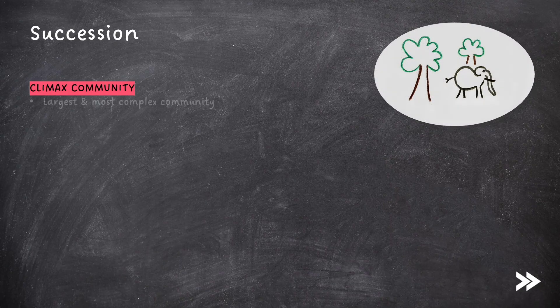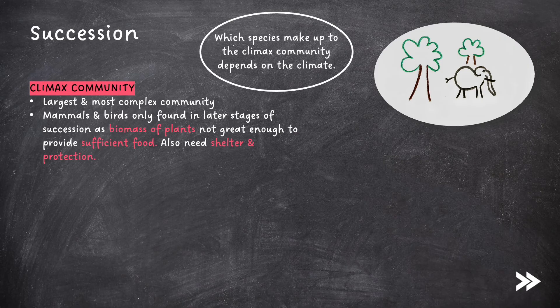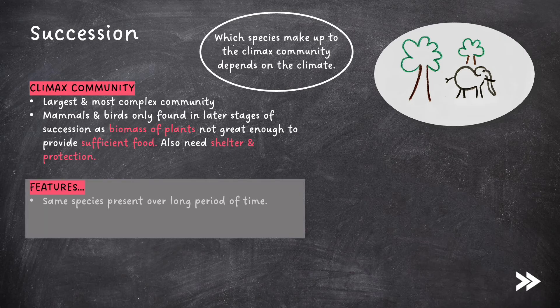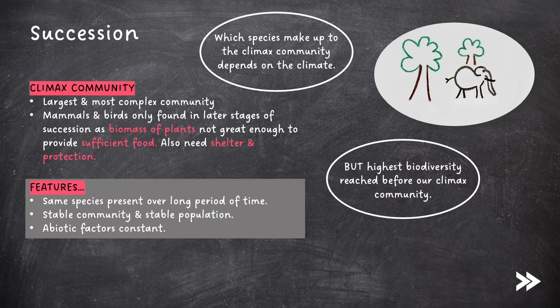Finally, we reach the climax community — the largest and most complex community. Mammals and birds are only found in later stages of succession, as the biomass of plants is not great enough earlier to provide sufficient food, and they also need shelter and protection. Which species make up the climax community depends on the climate. Features include the same species being present over a long period of time, a stable community and stable population, and constant abiotic factors. Note, however, that the highest biodiversity is reached before the climax community.